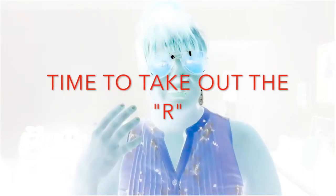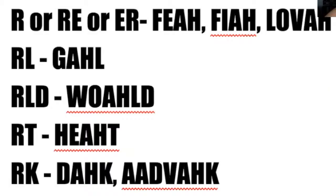Now we're going to try this again and we're going to try not to say any of the R's. We're going to challenge our minds — what we know, what we were taught — and tell our brain that we're in control of how we want that vowel to sound, how we want that R to be non-existent or existent but subtle. So we're going to take the R's out and try not to say them at all. Let's see if we can read these together: fear, fire, lover, gull, world, hot, dark, aardvark.